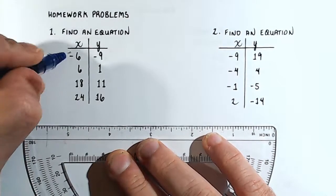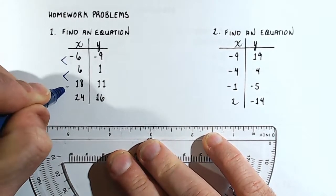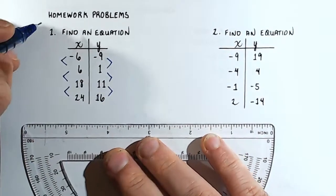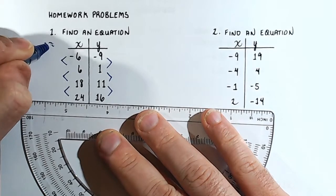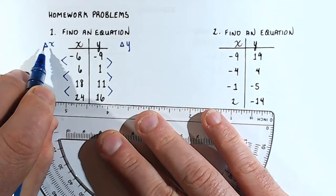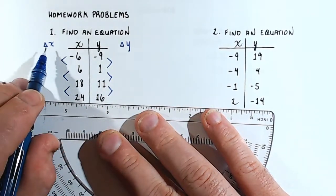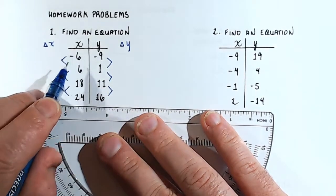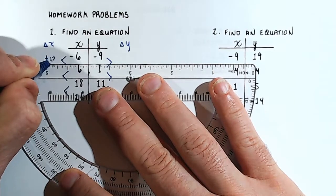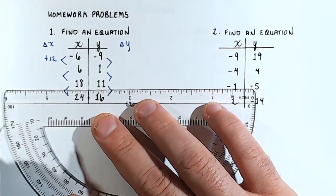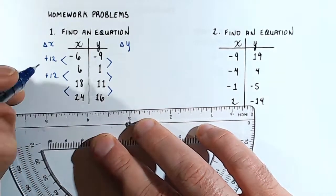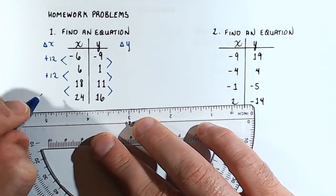The first step is to compute the change in x and the change in y. Remember, this little triangle means delta in Greek, and in mathematics we read this as 'change in x' and 'change in y.' What's happening between negative 6 and 6 is it is plus 12. Between 6 and 18 it is plus 12. Between 18 and 24 that is plus 6.